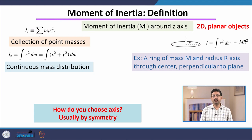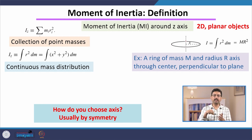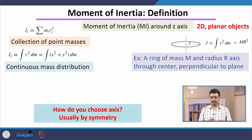Usually, we choose the axis by the symmetry of the object. For example, for a ring the natural choice is an axis passing through the center, because the mass distribution will be symmetric about the center. However, in this course we are going to generalize this definition and show that you can choose any arbitrary axis, and we will learn how to compute moment of inertia about any arbitrary choice of axis.